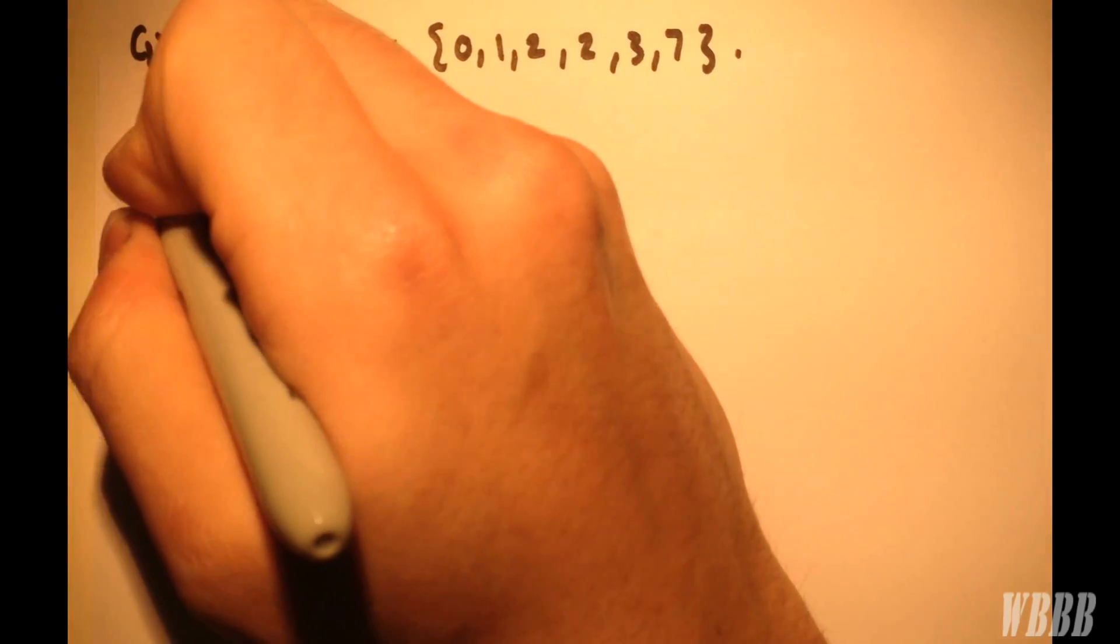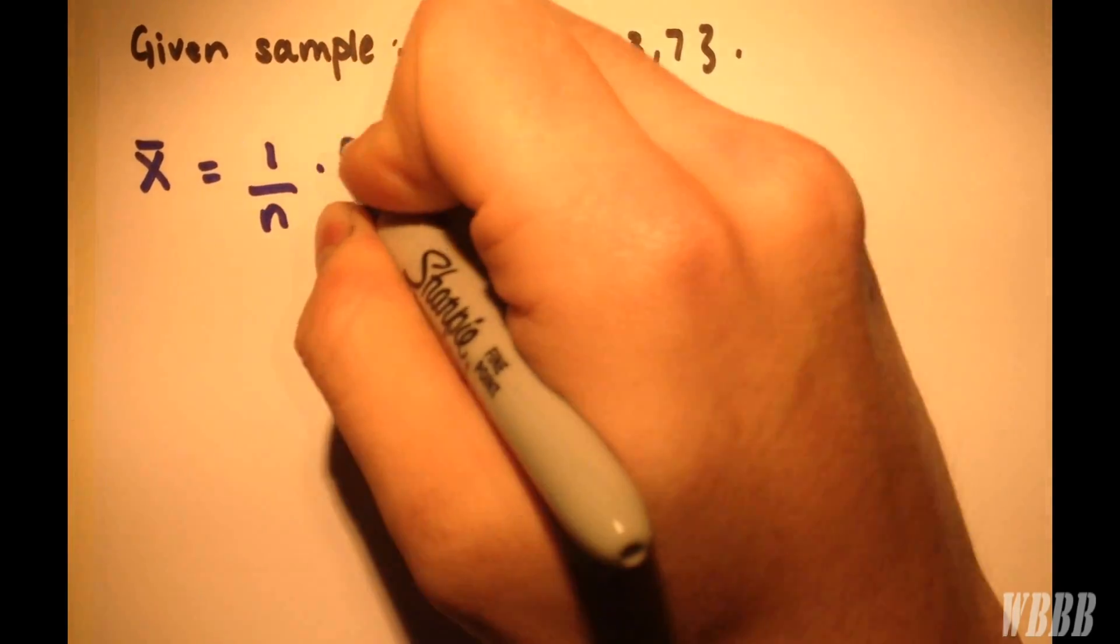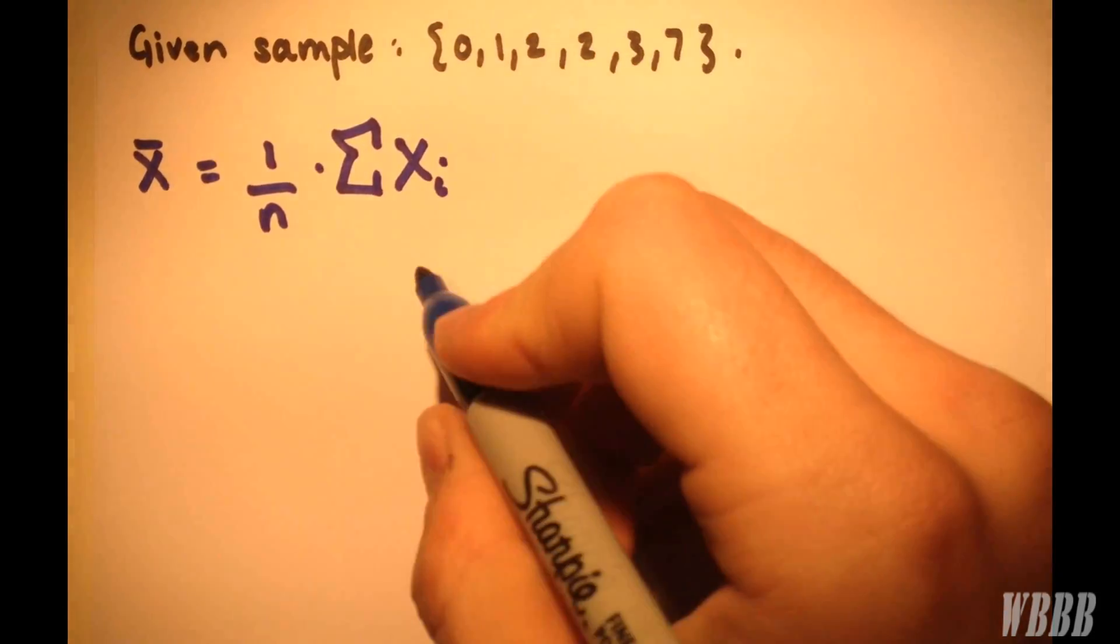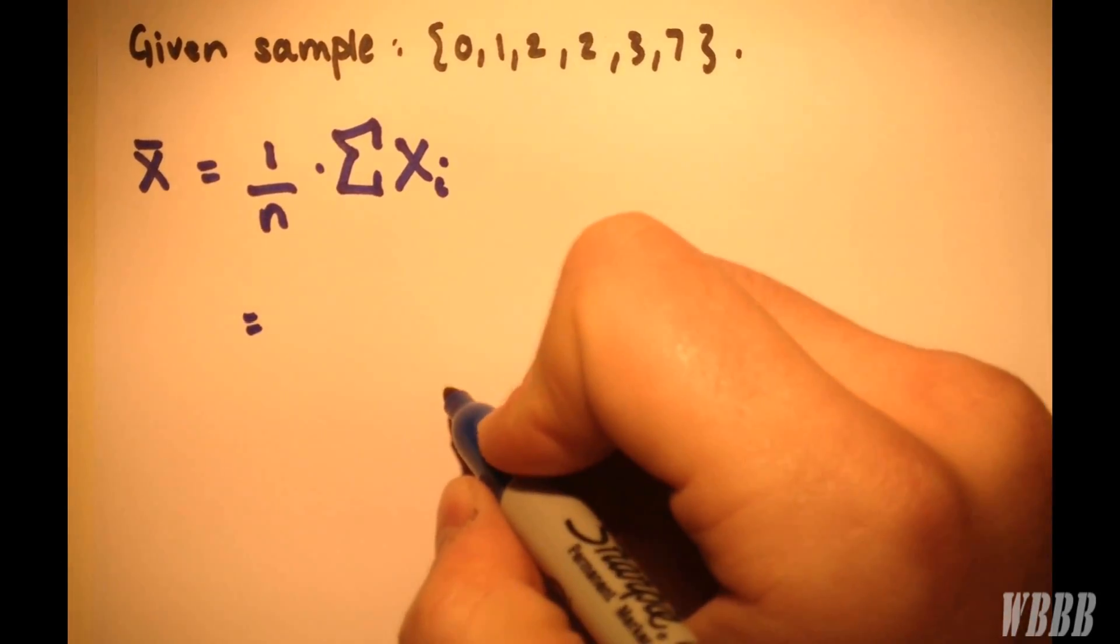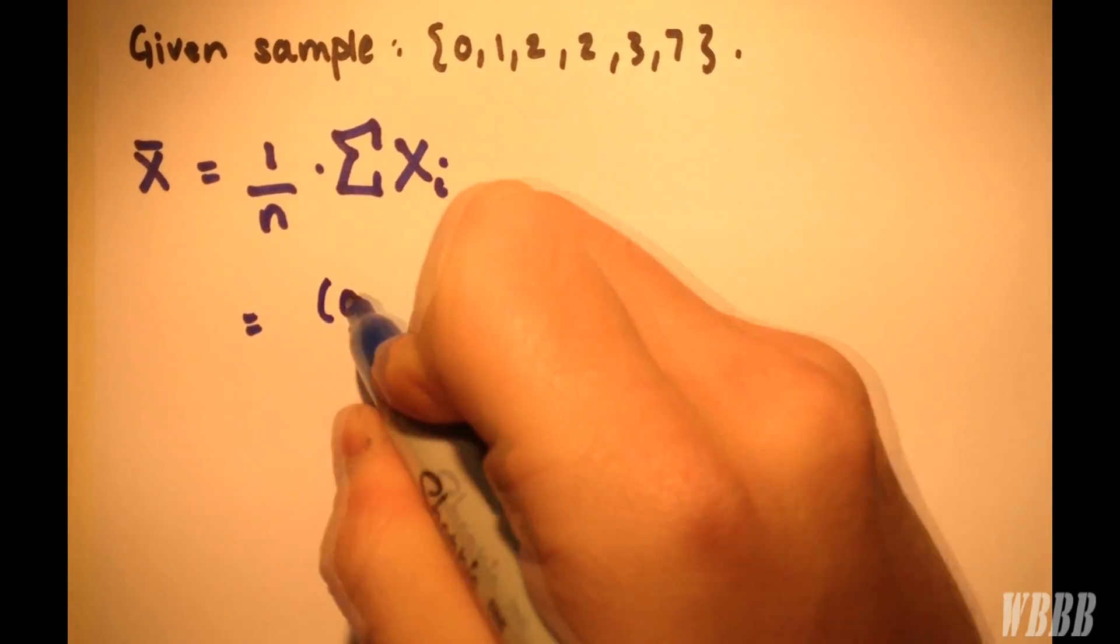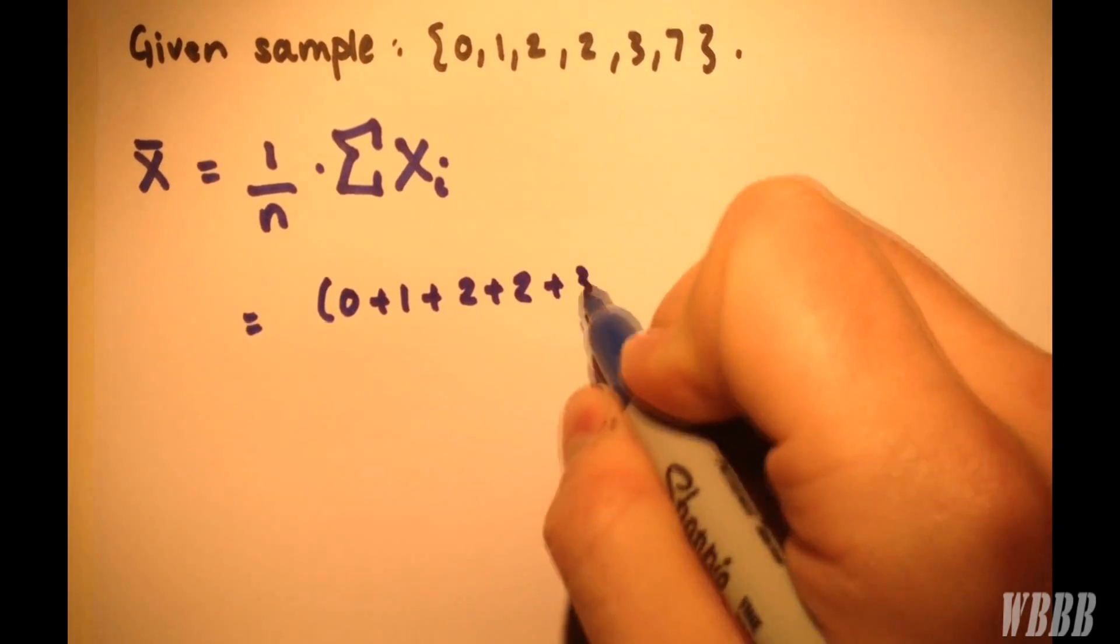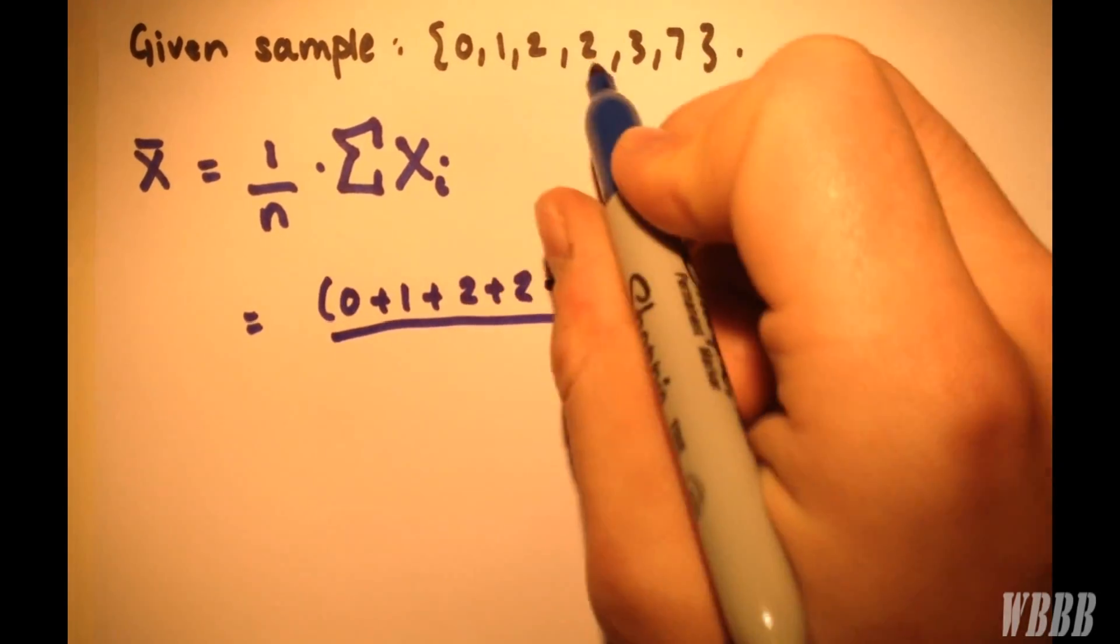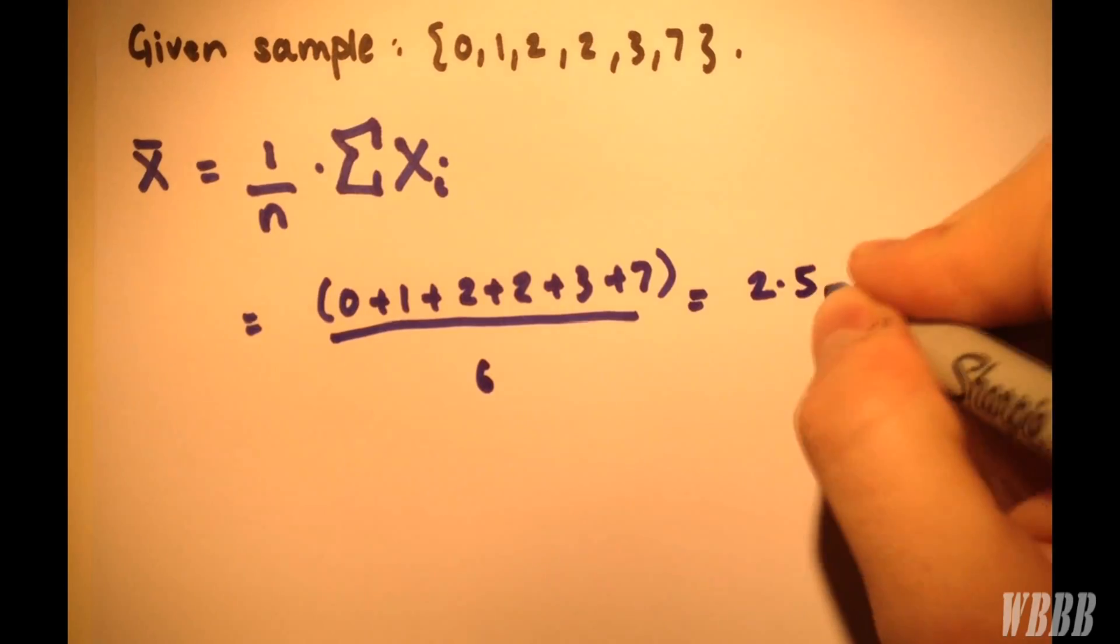So the mean value, very simple, x̄ is equal to 1 over n times the sum of the values. So all we have to do is add them all up and divide by how many there are. So 0 plus 1 plus 2 plus 2 plus 3 plus 7 all divided by 1, 2, 3, 4, 5, 6 gives us a mean value of 2.5.